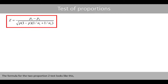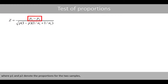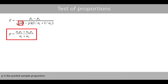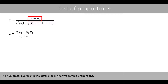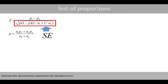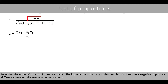The formula for the two proportion z-test uses p1 and p2 to denote the proportions for the two samples, and n1 and n2 to represent the corresponding sample sizes. p is the pooled sample proportion — if one sample proportion was estimated from a larger sample size, the equation puts more weight on that proportion when calculating the pooled sample proportion. The numerator represents the difference in the two sample proportions, whereas the denominator represents the standard error. Note that the order of p1 and p2 does not matter.